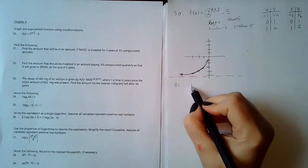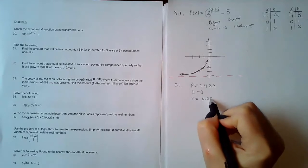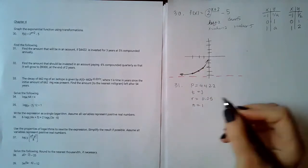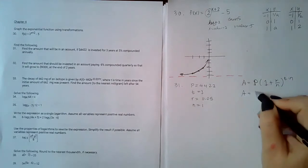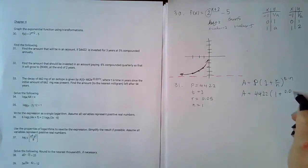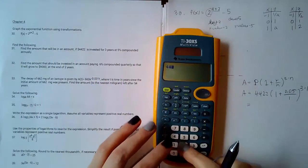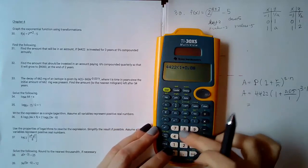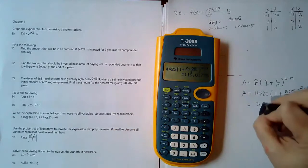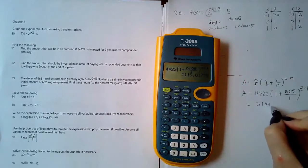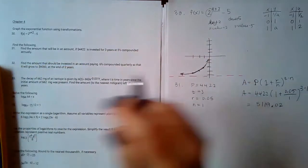Number 31 says find the amount in an account if that much is deposited for 3 years at 5% (0.05) compounded annually. I use the formula P(1 + r/n)^(t·n). Plugging in: 4422 times (1 + 0.05/1) raised to the power 3 times 1. Rounded to the nearest cent, the answer is $5,119.02, where the 7 in the next decimal place rounds it up to 2 cents.